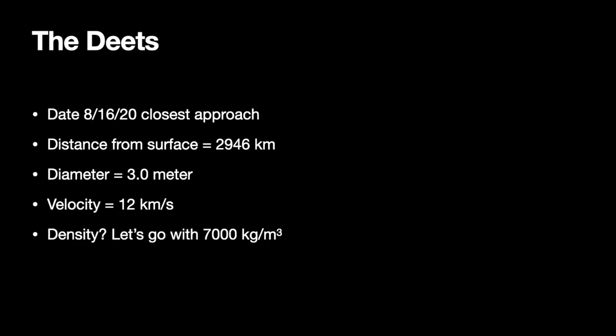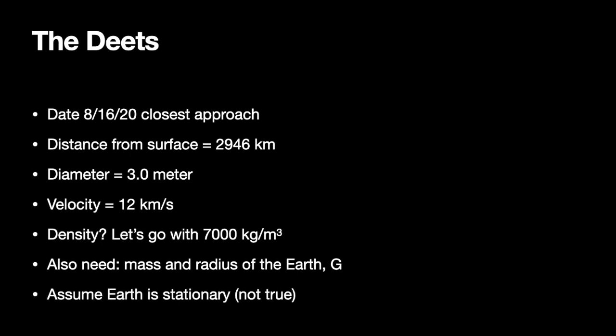We don't actually need to find the density unless the asteroid pulls on the Earth, which it won't — but we can change that later. I'm going to say it's iron-ish, so 7,000 kilograms per cubic meter. I also need the radius of the Earth, because this distance is from the surface, so I need to add the radius to get the distance from the center. I also need the gravitational constant G and the mass of the Earth.